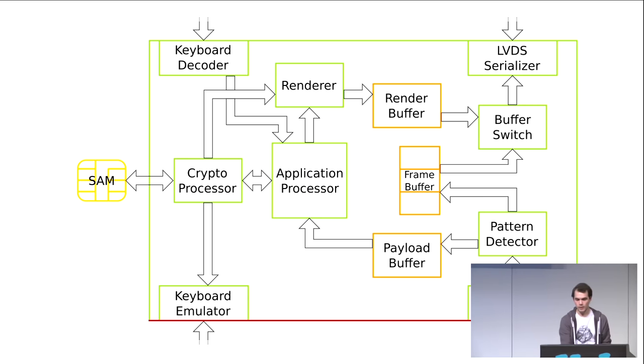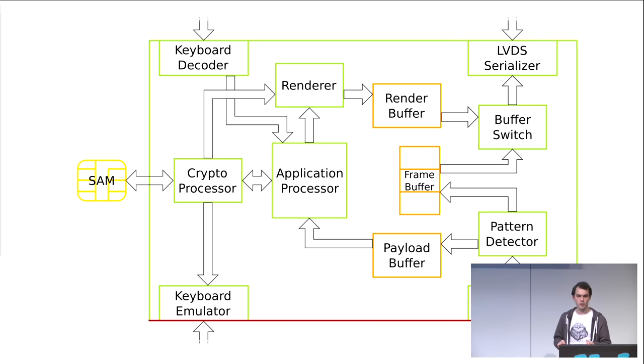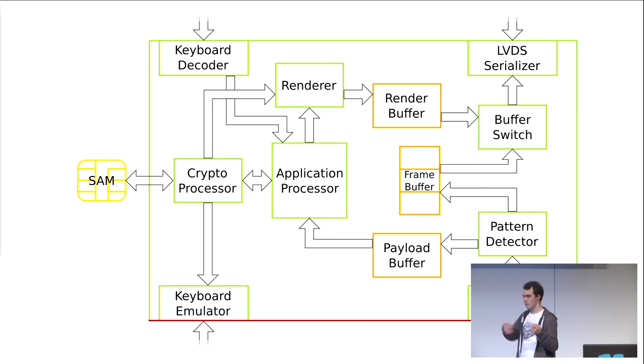The nice thing about this compartmentalization is that it enables some neat security features. For example, the renderer has two inputs: the application processor may want to render some kind of user interface — a password prompt or some message — and on the other hand, the crypto coprocessor wants to render plaintext data. Since the renderer is getting two different data streams, it could color-code them, making spoofing of application processor messages a little harder. So you know that if the text is blue, it's the interceptor directly talking to you, and if the text is red, it's a decrypted email you're reading.